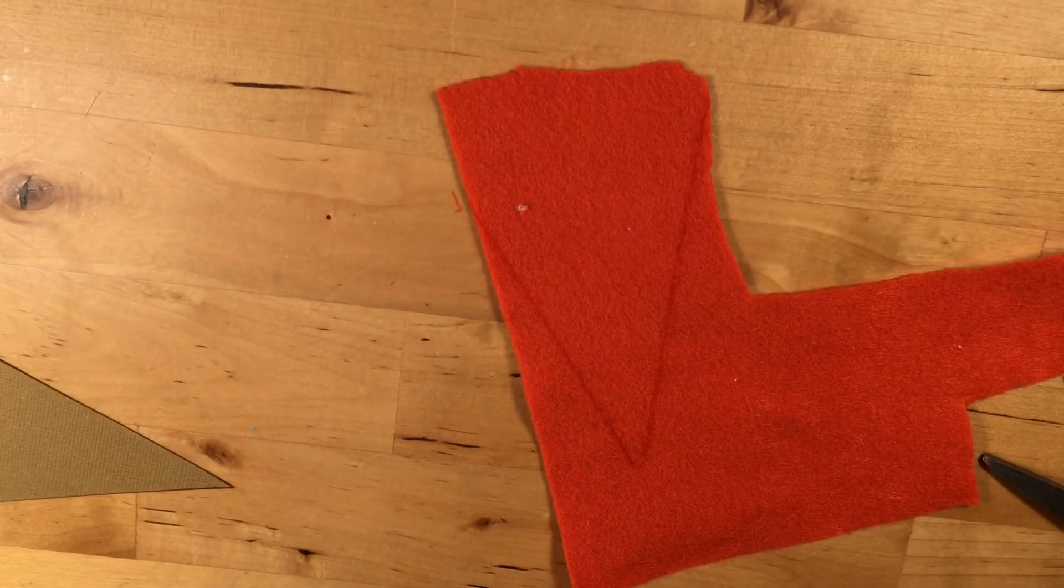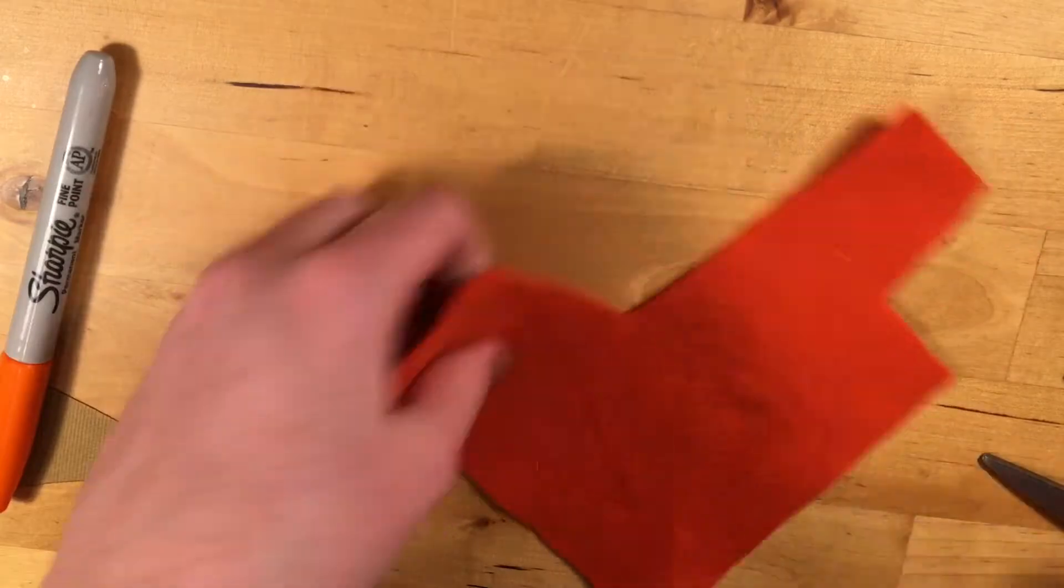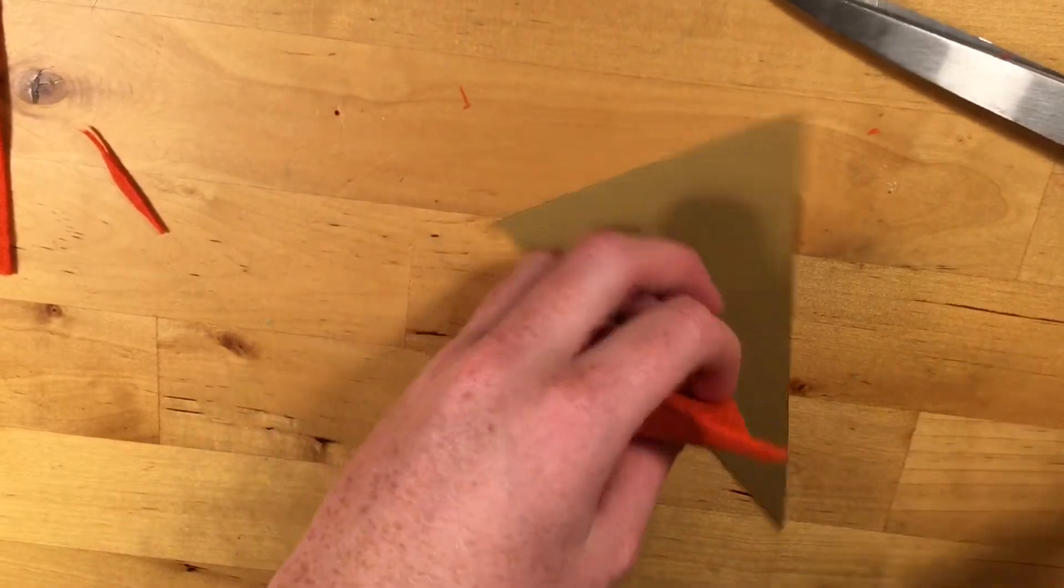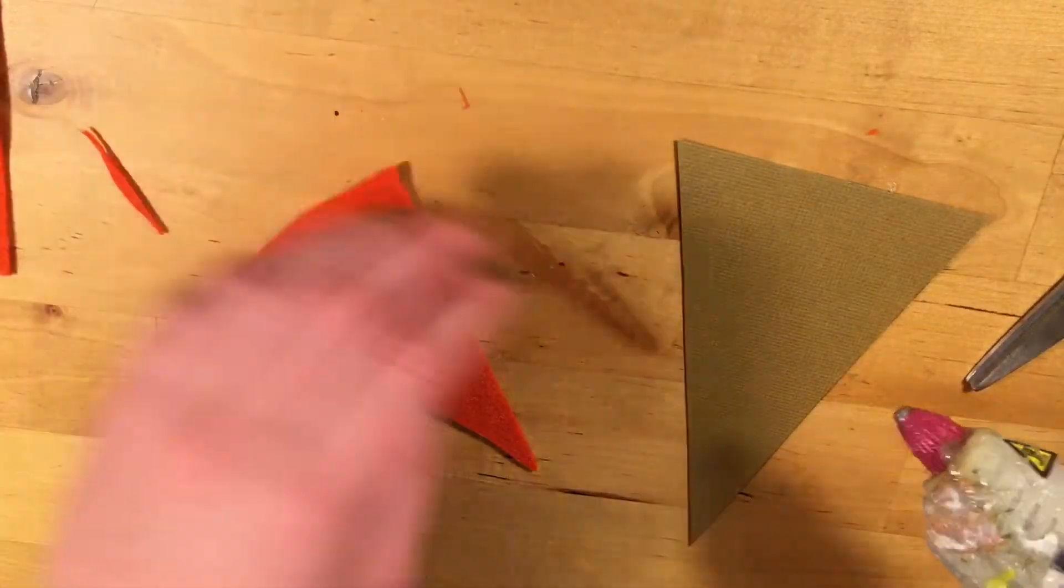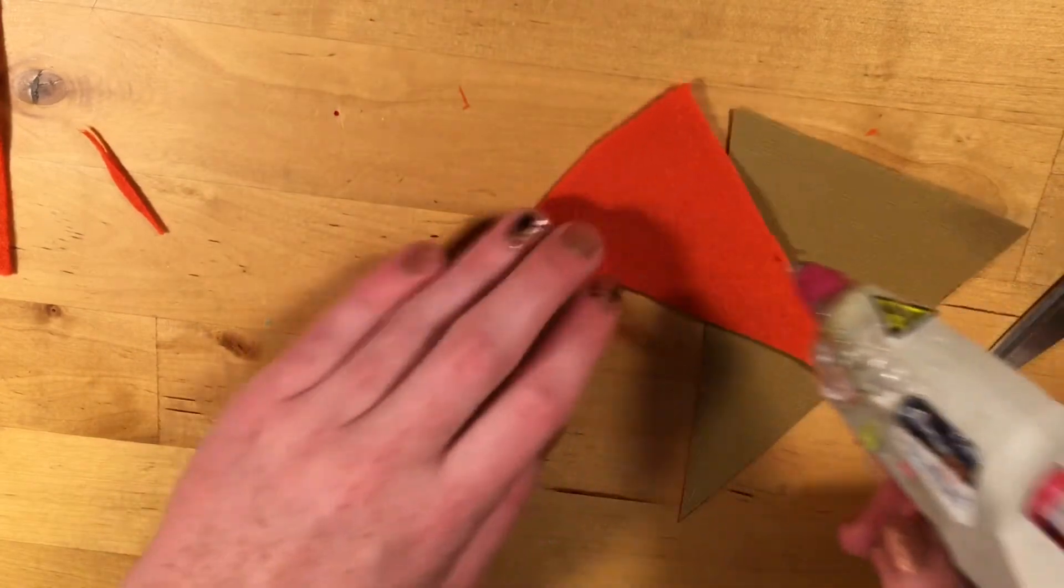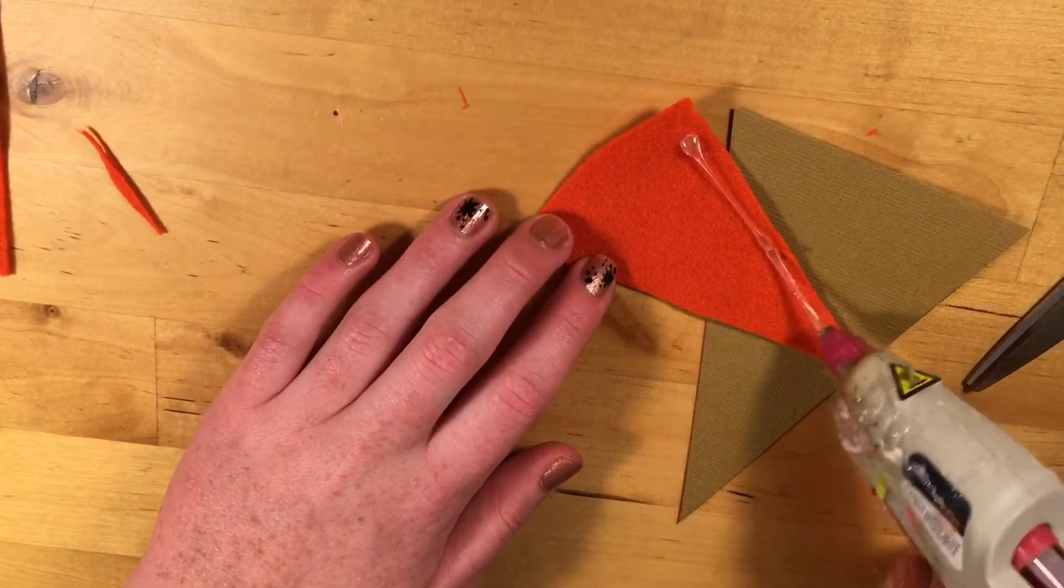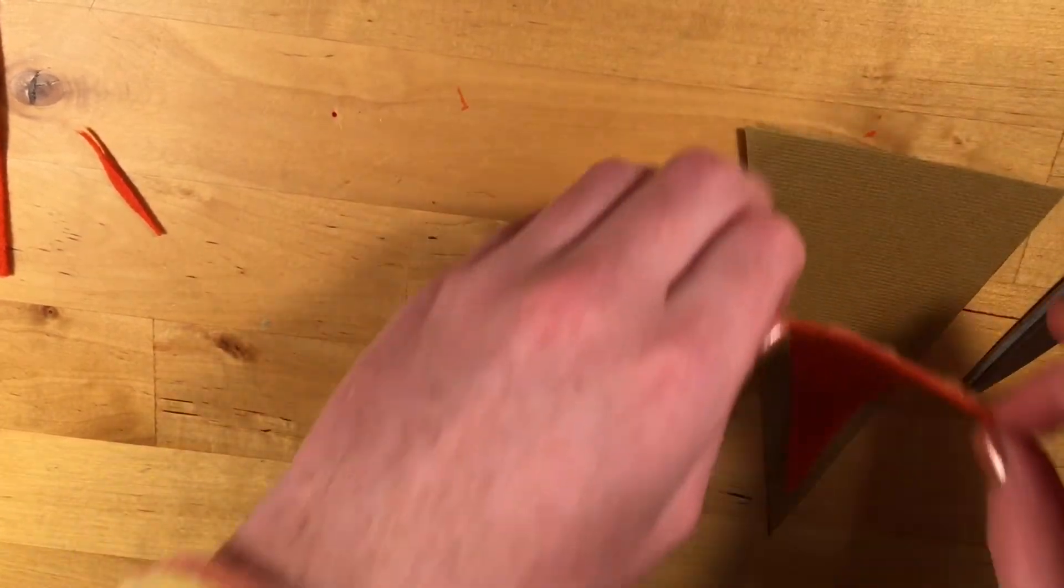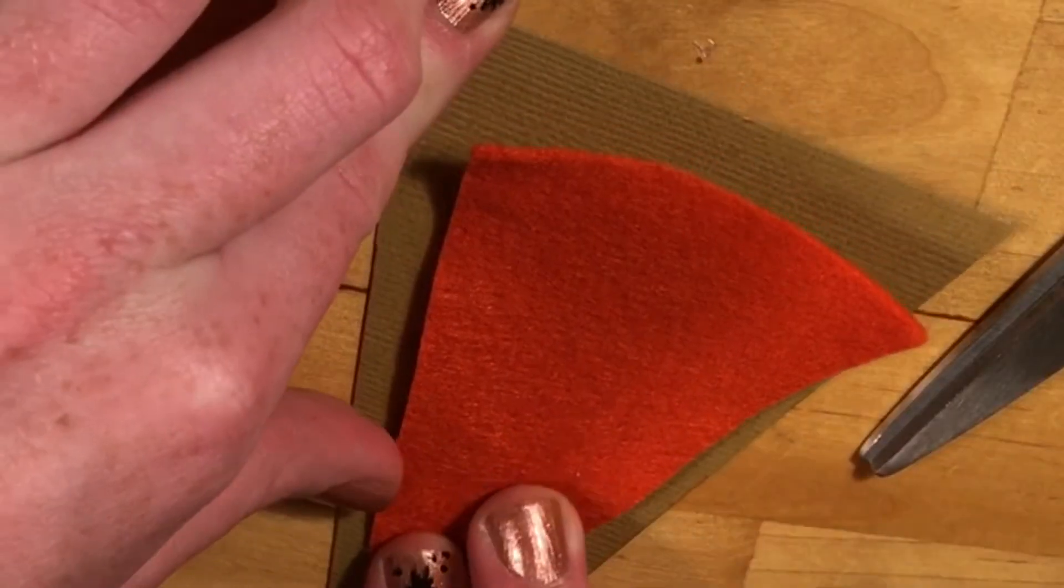Then what I'm going to do is I'm just going to cut a little bit smaller than that. Okay, so now that we've done that, I'm going to take my hot glue gun and just put some glue on this piece of felt. Then you're just going to... Wait, oh that was terrible.